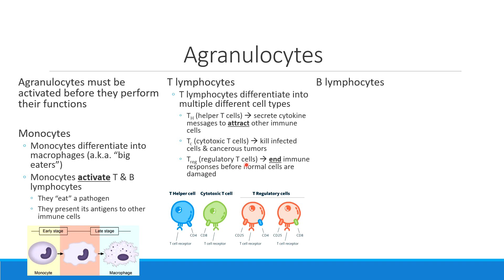There are also what are called regulatory T cells. When we talk about regulatory T cells, these are the kind of T cells that regulate the immune response — I want you to highlight: before normal cells are damaged. The purpose of regulatory T cells is, once we've dealt with the virus, the bacteria, the cancer, we want to stop that immune reaction. Regulatory T cells help us to do that. These are the three primary functional T cells. What a T helper cell responds to is different than what a cytotoxic T cell responds to, and regulatory cells are listening for some of the same kinds of messages that the other types of T cells are.